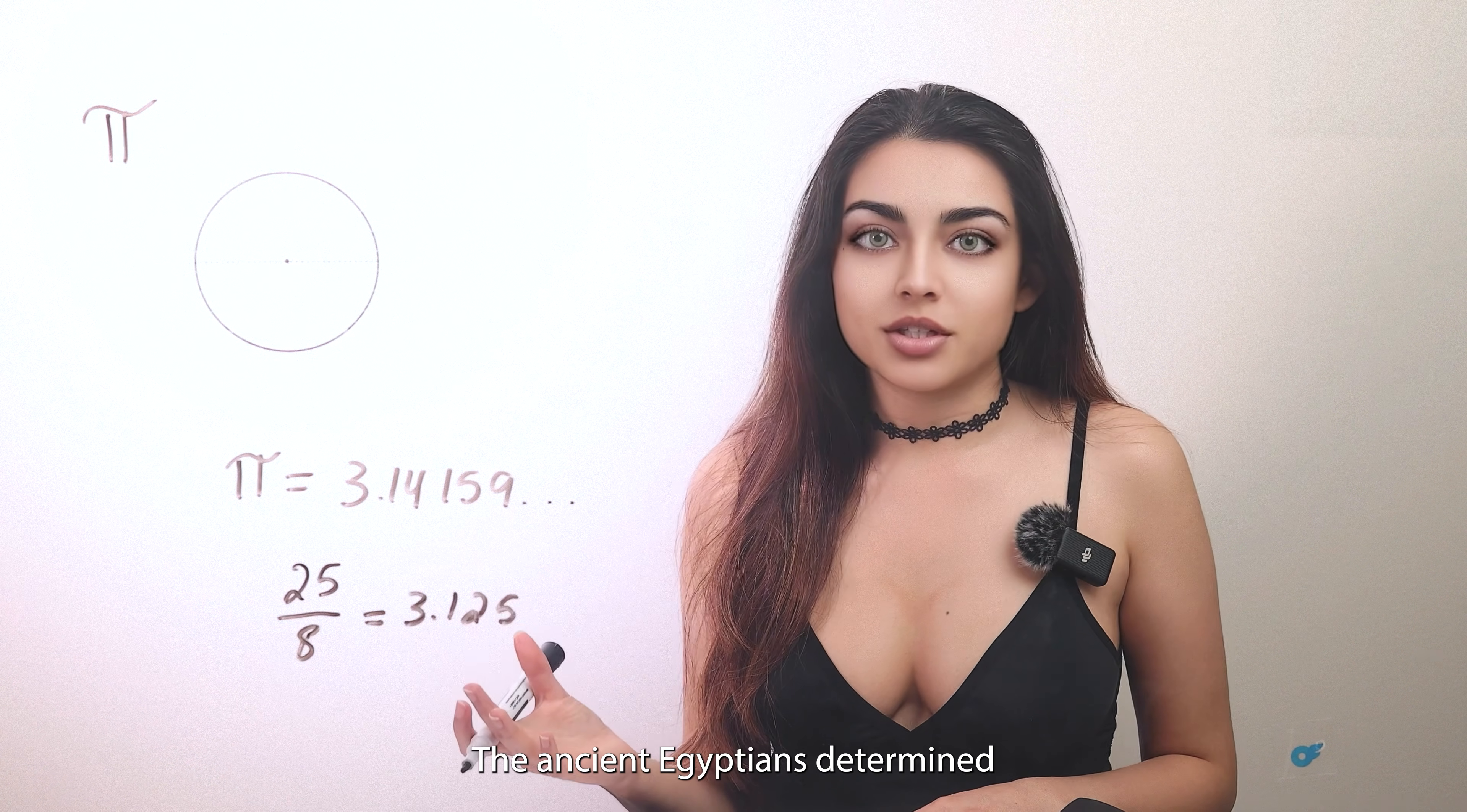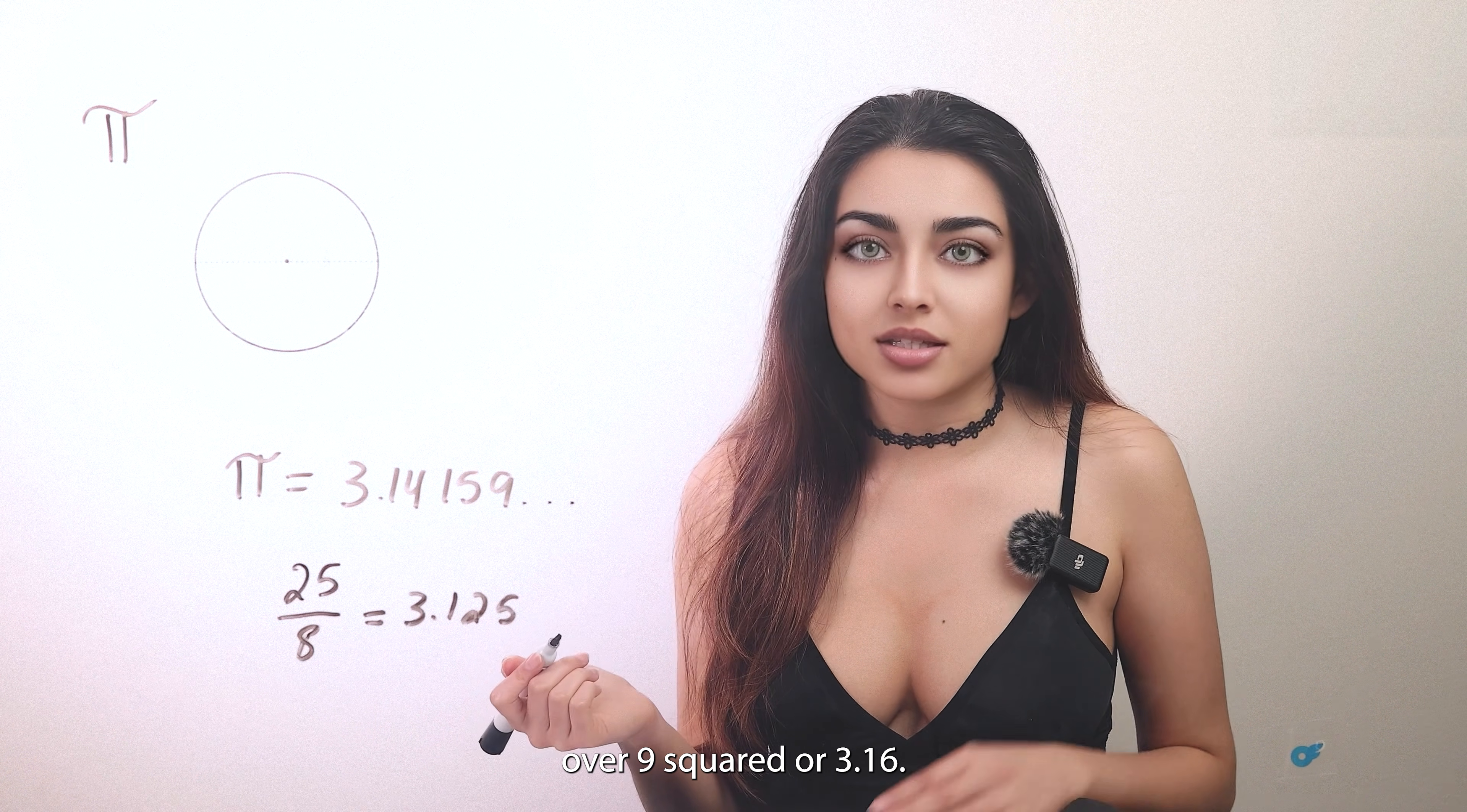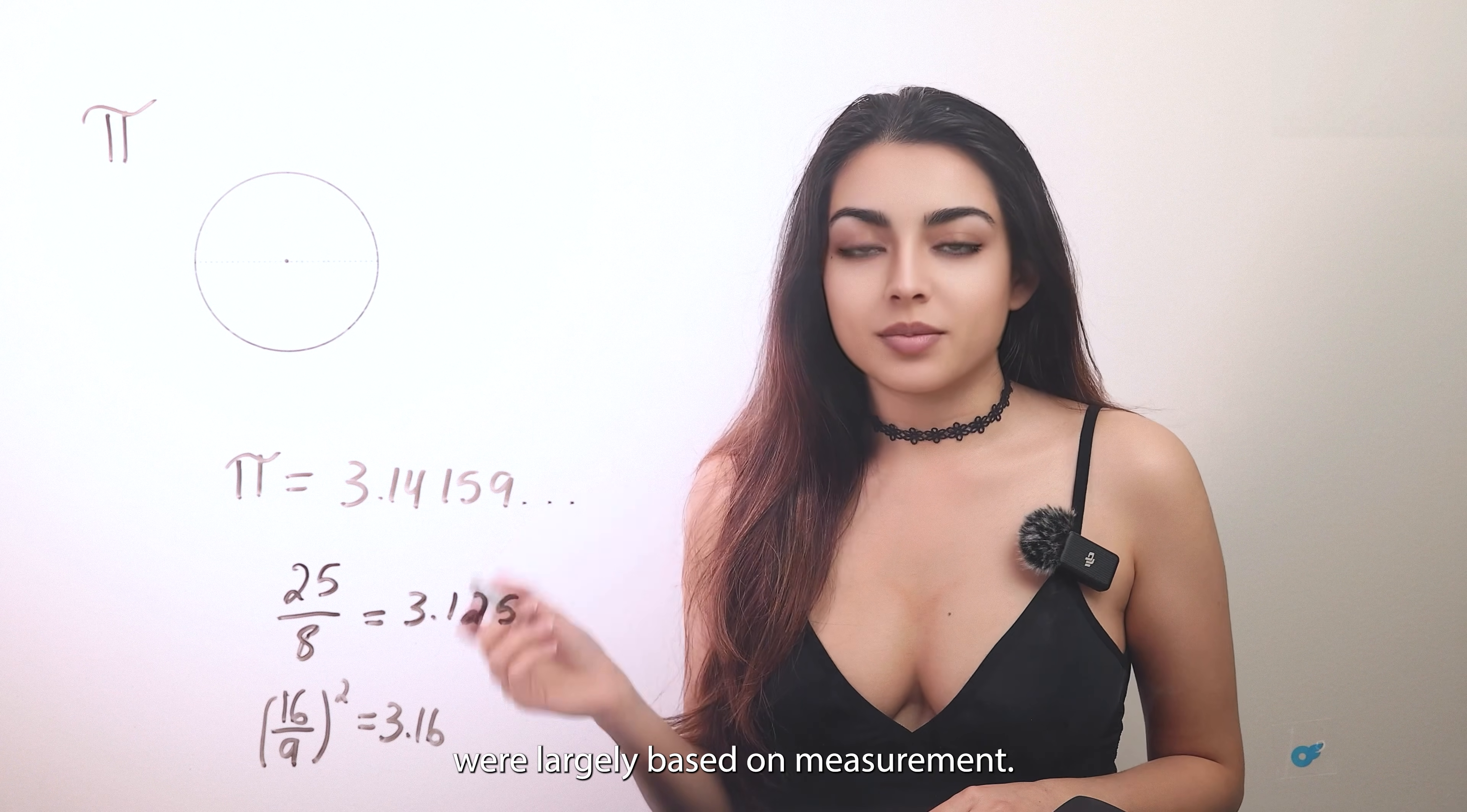The ancient Egyptians determined the ratio between 16 over 9 squared or 3.16. The earliest calculations of pi were largely based on measurement.